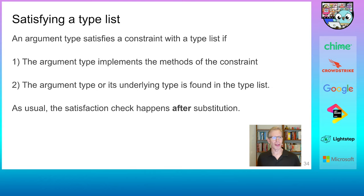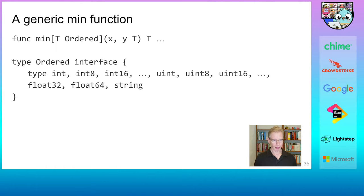Here are the rules for satisfying a constraint with a type list. As one would expect, any argument type must implement the constraints methods. Additionally, the argument type or its underlying type must be found in the type list. We do include the underlying types because that makes generic functions more general. For instance, with this rule, our sign function will not only work for float32 and float64, but it will also work for arguments of derived types such as myfloat32 and myfloat64.